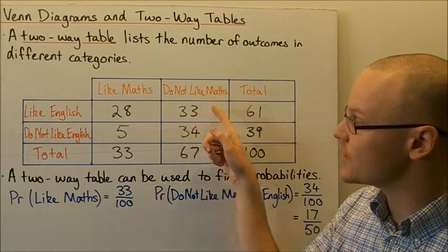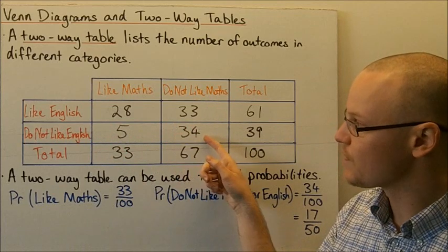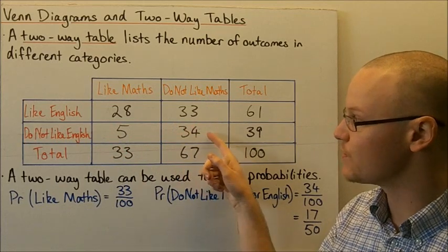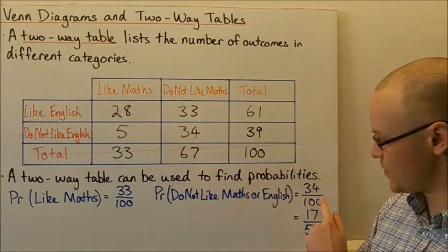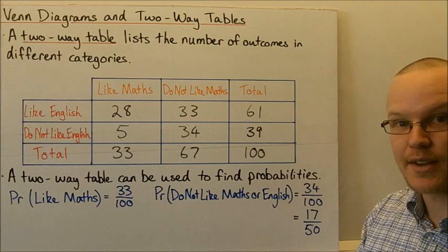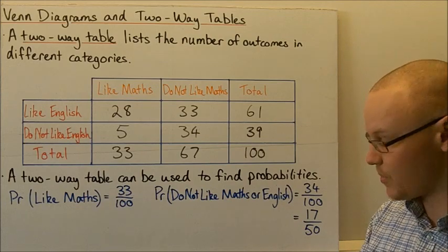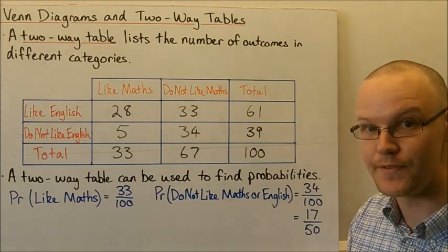These students do not like Maths or English. It's 34 students out of a total of 100, which simplifies to a probability of 17 out of 50.